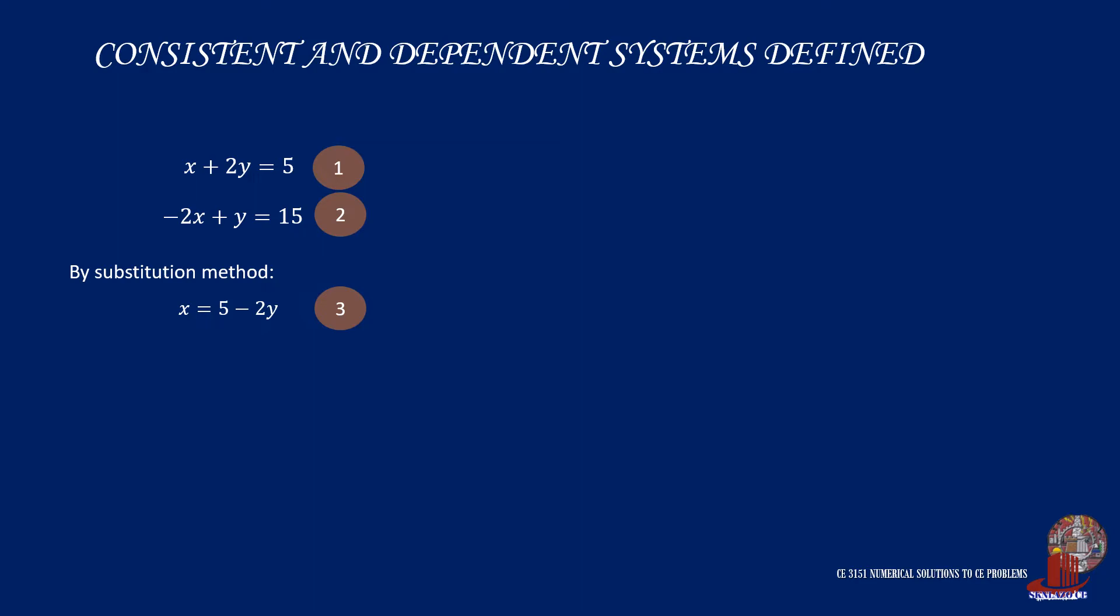Let's call this equation 3. If we substitute this into the second equation, we get negative 2 of the quantity 5 minus 2y plus y is equal to 15. Distribute values to have negative 10 plus 4y plus y is equal to 15, making 5y as 25. If we divide everything by 5, we end up with y equal to 5. This value of y is again plugged into equation 3 to get x as 5 minus twice of 5, giving x equal to negative 5.